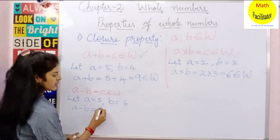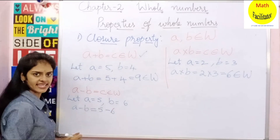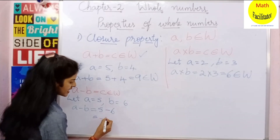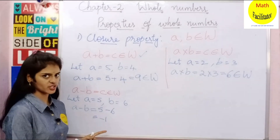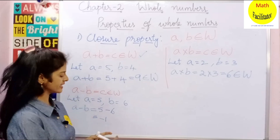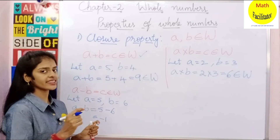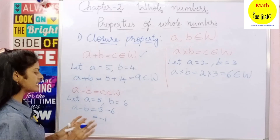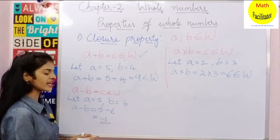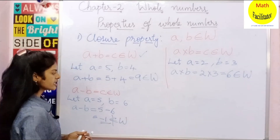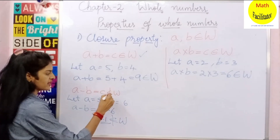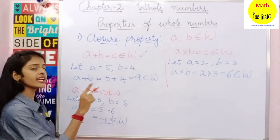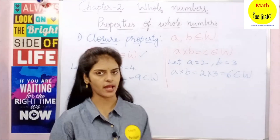A minus B is nothing but 5 minus 6, which is minus 1. The answer is minus 1 — this concept of integers. You will learn this when you study the integers chapter. For now, minus 1 does not belong to whole numbers. So closure property under subtraction is not satisfied in whole numbers.